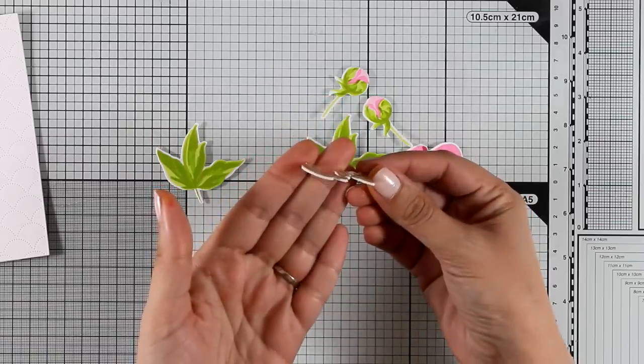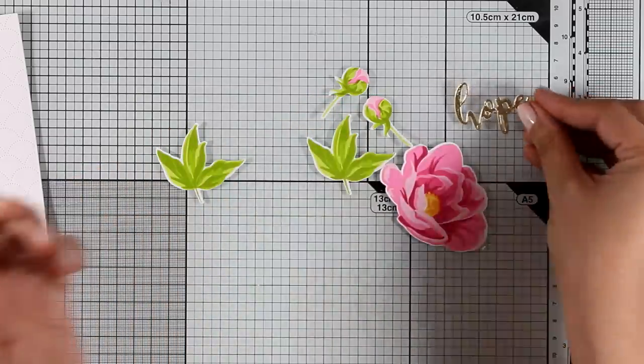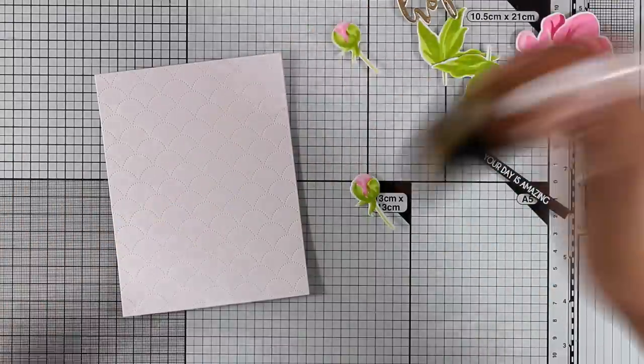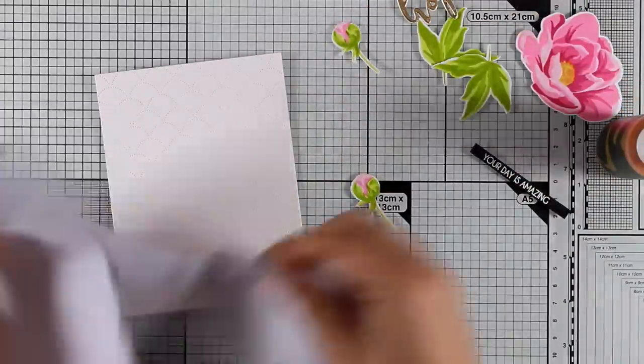And I actually used the large nouveau gluepen to stack one on top of the other. Now on my panel that I have cut out with our beautiful cover die I'm going to add some splashes.